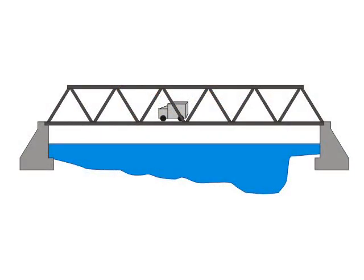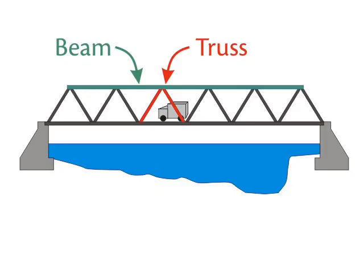Instead of a single beam having to withstand all of the forces, a series of beams and trusses are used. A truss is a triangle-shaped frame that helps spread the compression and tension forces around.